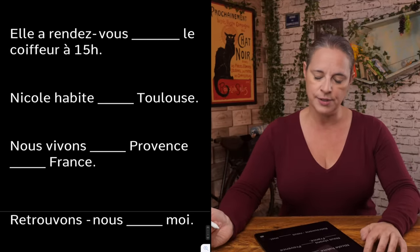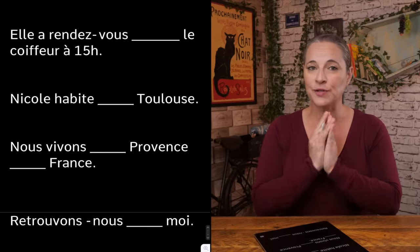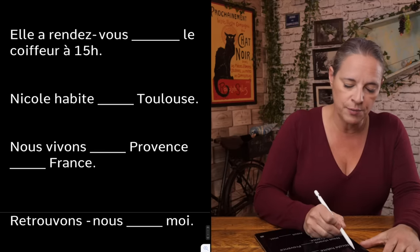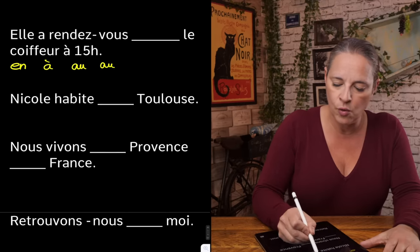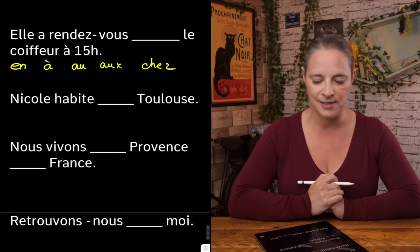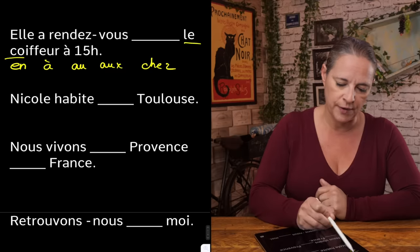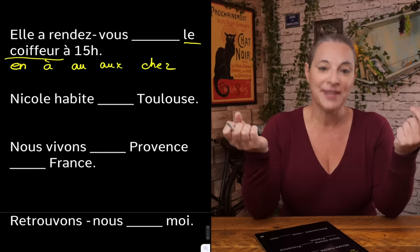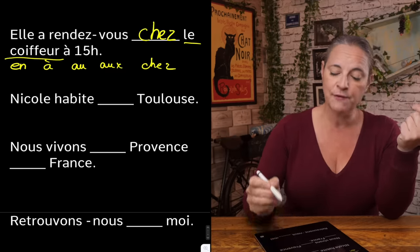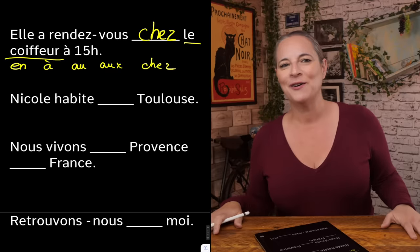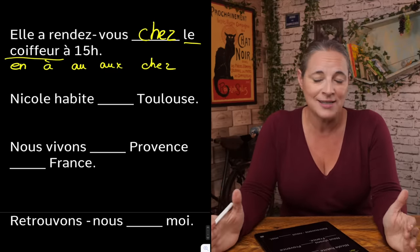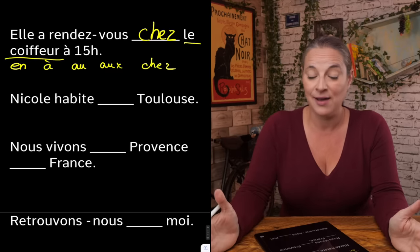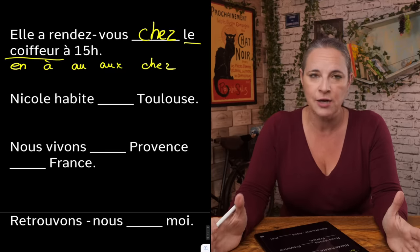Let's practice with four examples. 'Elle a rendez-vous ___ le coiffeur à 15h.' Which preposition is it? Le coiffeur is the hairdresser. What preposition do we use when referring to the hairdresser? You would most definitely use 'chez' because it refers to being at someone's place — it's not a country, not a town, it is someone's place. So: 'elle a rendez-vous chez le coiffeur à 15h' — she has an appointment at the hairdresser at 3 p.m.